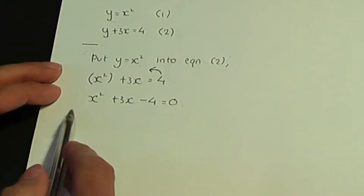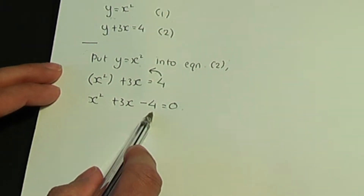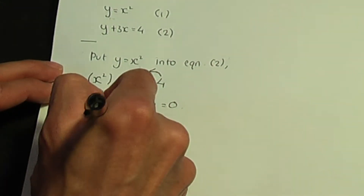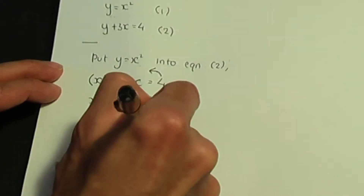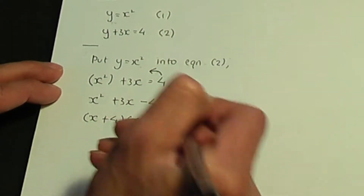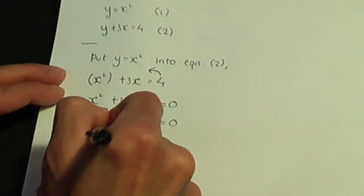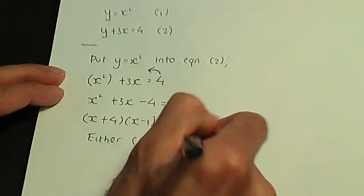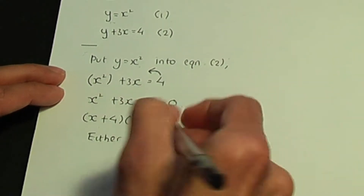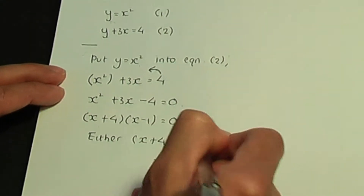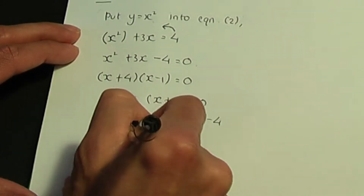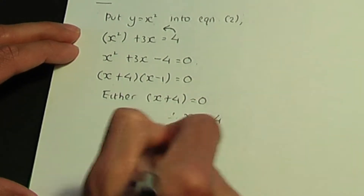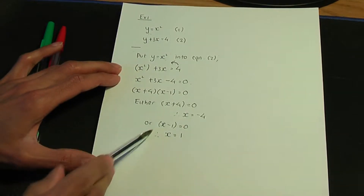From here you can use the quadratic formula or factorise. This quadratic is factorisable — the two factors are x plus 4 and x minus 1. So either x plus 4 equals 0, giving x equals minus 4, or x minus 1 equals 0, giving x equals 1. So we have two values of x.